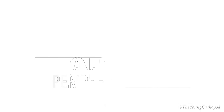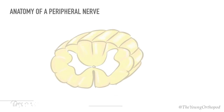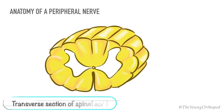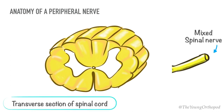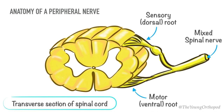Let us quickly review the anatomy of a peripheral nerve. Each spinal nerve is formed by the union of its dorsal root with its ventral root. The cell bodies of the motor neurons supplying the peripheral muscles are clustered in the anterior horn of the spinal cord, and the cell bodies of sensory neurons are situated in the dorsal root ganglia.